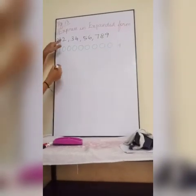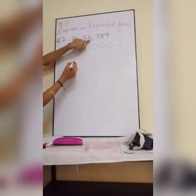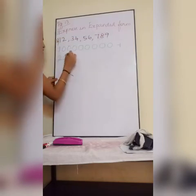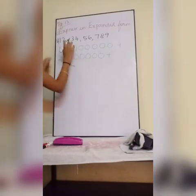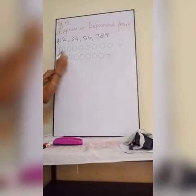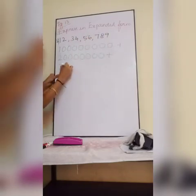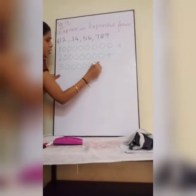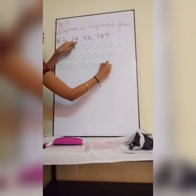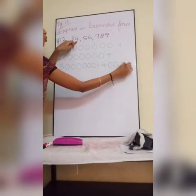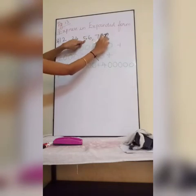Plus after that 2, then 7 zeros — 1, 2, 3, 4, 5, 6, 7 — so 7 zeros you will put. Plus after that 3, 6 zeros — 1, 2, 3, 4, 5, 6. Plus after that 4, after that 5 zeros — 1, 2, 3, 4, 5. Plus 5, 4 zeros — 1, 2, 3, 4.